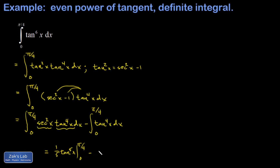I'm going to split that into tangent squared times tangent squared and apply that same identity again. This time we'll skip a little more of the work.